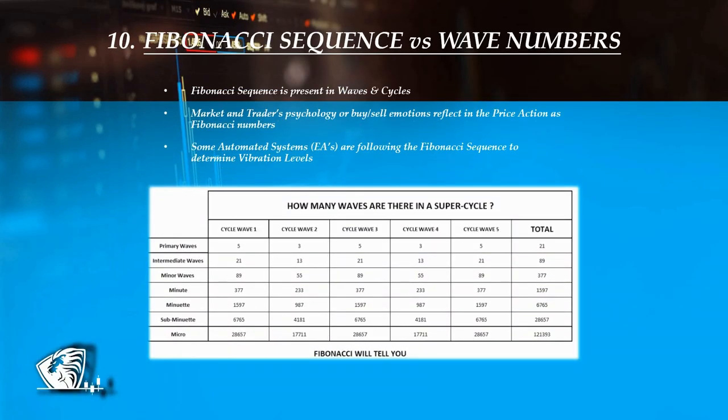The Fibonacci sequence can be found in waves as they unfold, and somehow the market and trader's psychology seems to be programmed by mathematics, hence the reason why some automated trading systems or EAs are programmed as well to follow the Fibonacci sequence. Take a quick look at the table in front of you — these are all Fibonacci numbers.